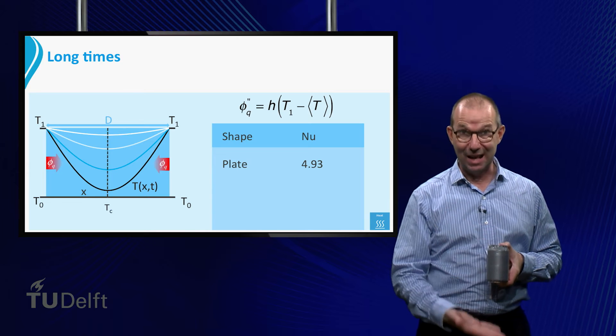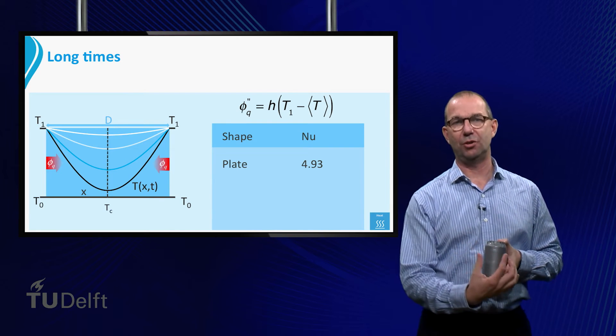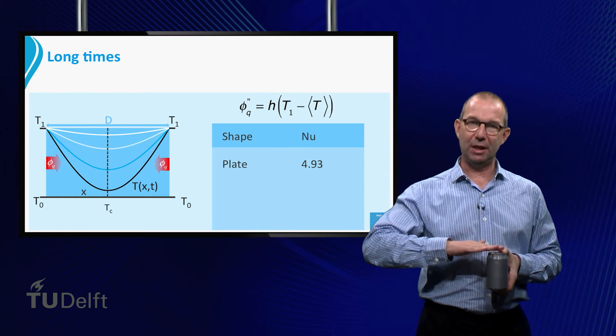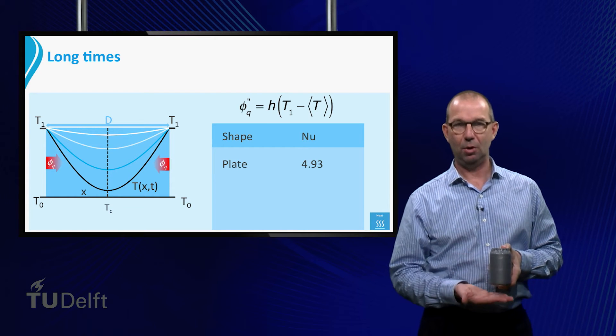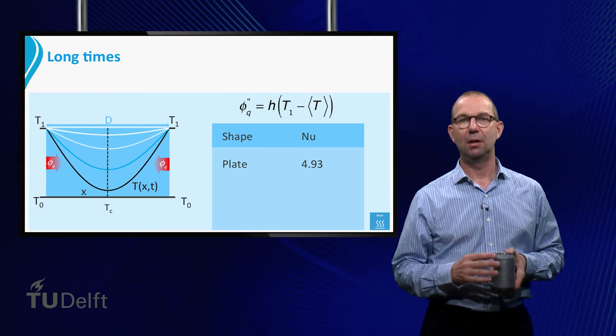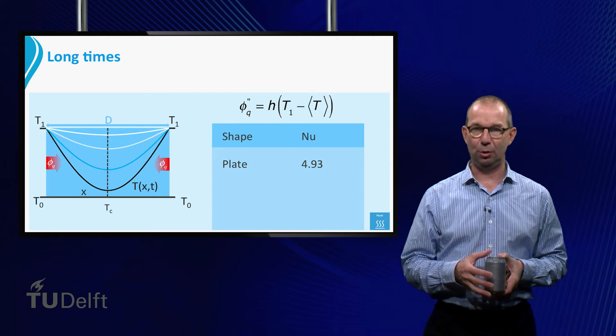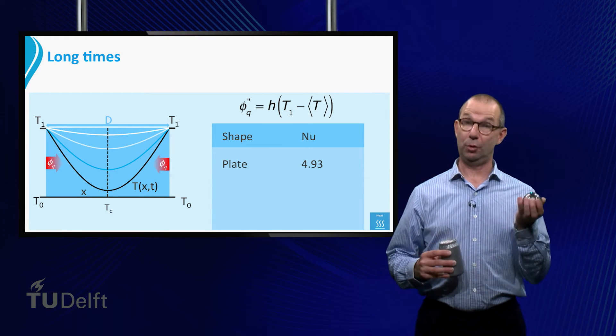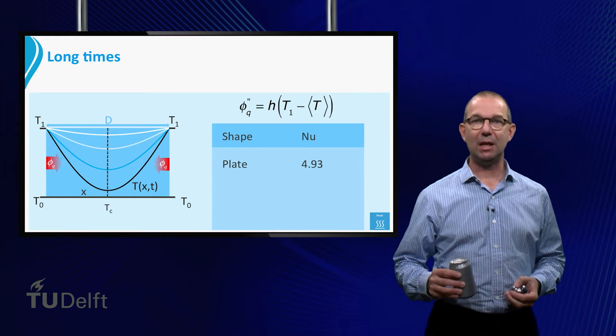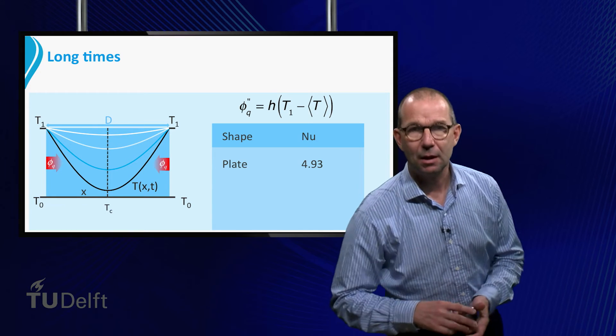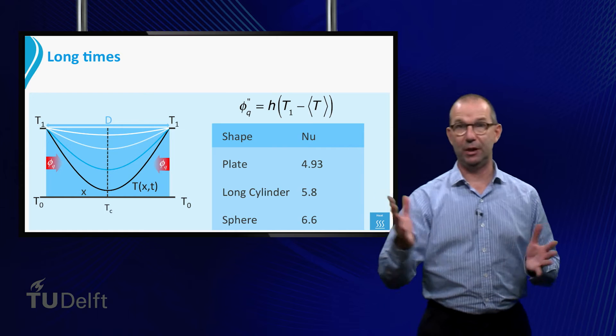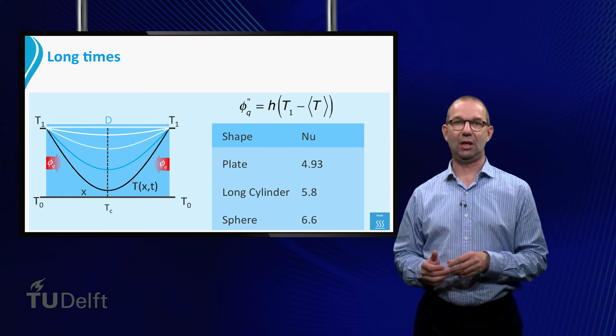Long meaning that its length is much larger than its diameter. That way we can safely ignore the heat flowing in via the top or via the bottom. There is also an exact solution for this very long cylinder as there is for the sphere. We can sum them up. For the long cylinder Nusselt is 5.8 and for the sphere Nusselt is 6.6.